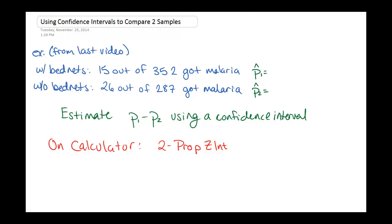Another way we can think about this is with a confidence interval. So we're looking at the difference between these two proportions. And remember the sample proportions we computed, 15 out of 352, this was 0.043 about. And the 26 out of 287, this was 0.091 about. So when we do a confidence interval with two samples, we're essentially looking at the difference between the two proportions.